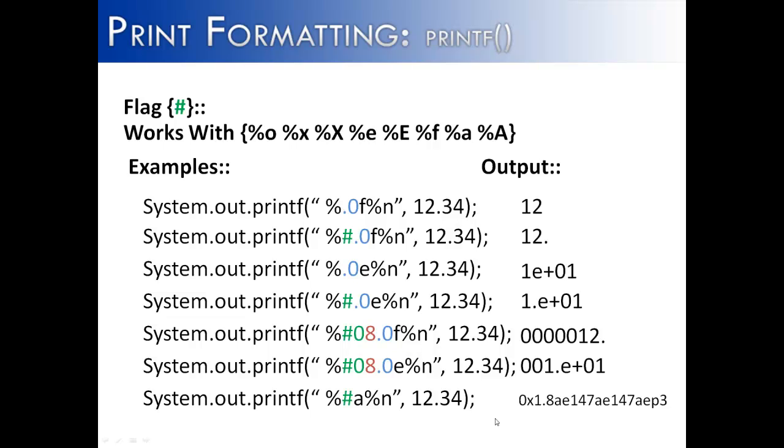The pound flag is a useful tool in the printf method in Java. It allows alternate forms for different types of numeric values. For the octal base, it appends a 0. For the hex base, it appends a 0x. For e and for float, it includes the decimal separator, even if there are no values after the decimal separator.